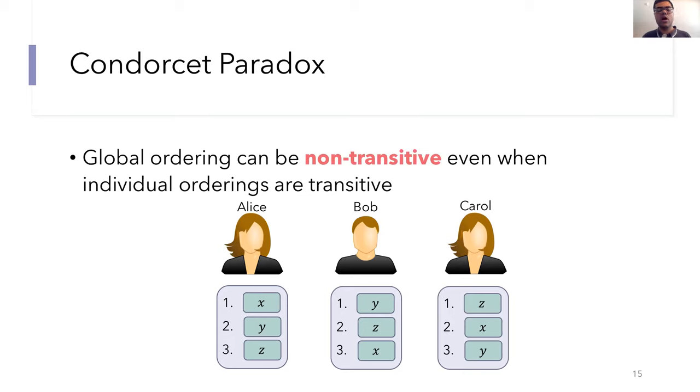So the receive order fairness definition is probably the most natural way to define fair ordering, but it does have one major flaw. Basically, carefully chosen transaction orderings can lead to a global intransitivity or a cycle in the ordering. For this, we'll draw from a surprising connection to social choice theory, particularly the Condorcet paradox. The Condorcet paradox is the situation resulting from a global non-transitive preference, even when all of the individual preferences are transitive.